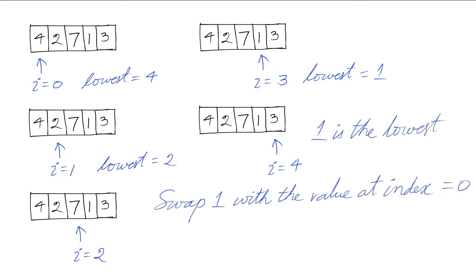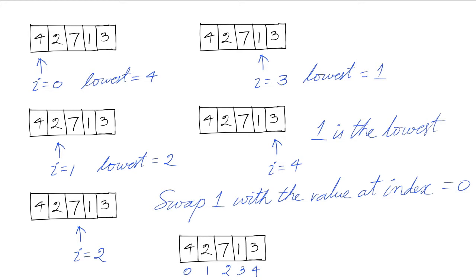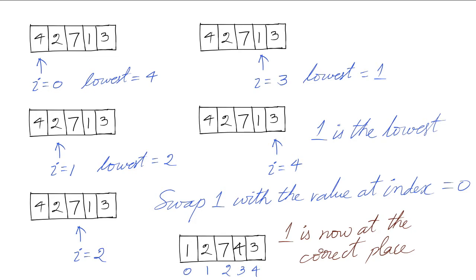We will now swap 1 with the value at index 0. Given this array and its indices, we are going to swap 1 to the first position and 4 will go into the position taken by element 1. So we will have 1, 2, 7, 4, 3 as a result of the swap. 1 is now at the correct place — it is the lowest value in the array, so it goes to the first position.